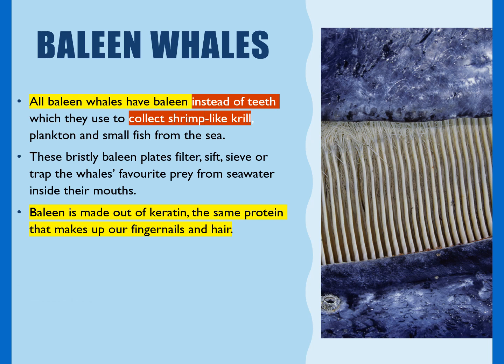There are fourteen species of baleen whales, including blue, bowhead, right, humpback, minke, and grey whales. Baleen whales are generally larger than toothed whales, except the sperm whale which is very large and has teeth. The baleen of the bowhead whale can be four meters long. Baleen whales migrate annually, travelling long distances between cold water feeding areas and warm water breeding areas.